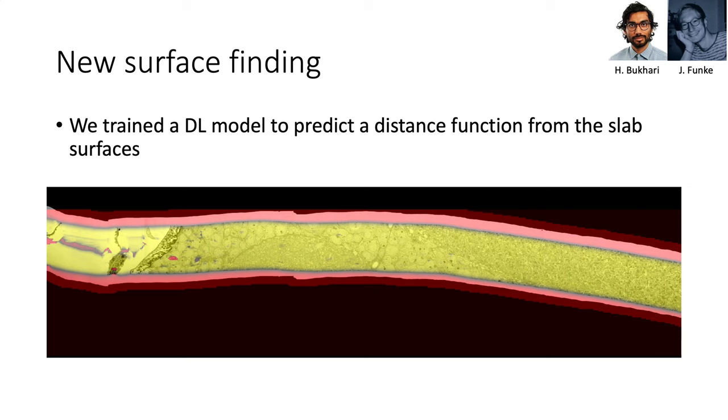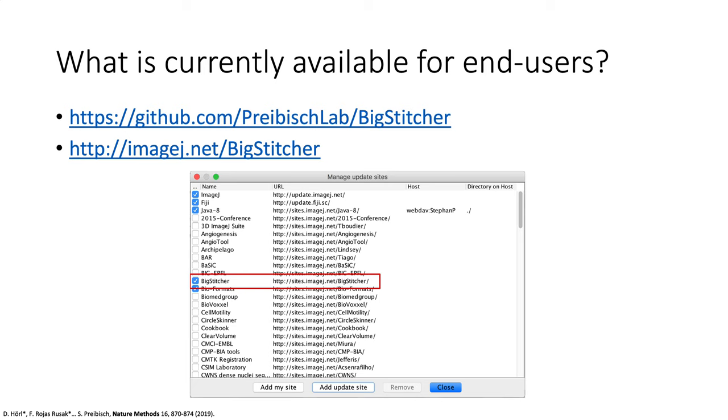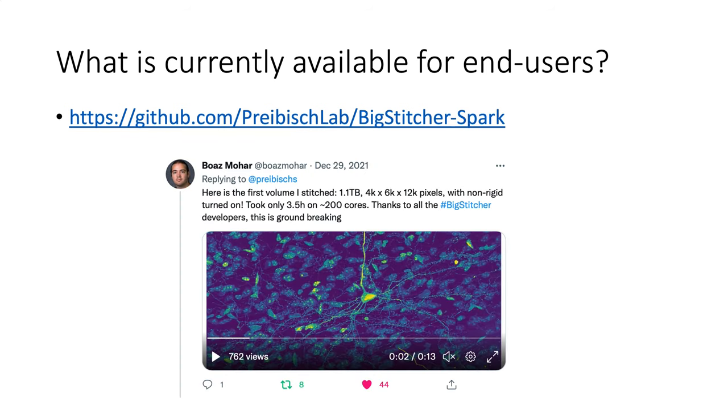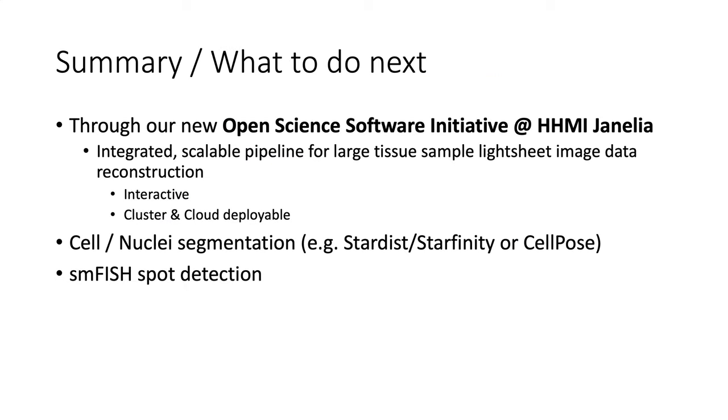What is currently available for end users? As I mentioned, BigStitcher is a GUI app you can download and use. Nikita actually made a nice YouTube video, there are tutorials, write me an email or write a comment on GitHub if you need any help. Even from the new project, some things are already available. We started the BigStitcher Spark repository, which for now allows you to do the most compute-intensive part, which is the fusion after you align everything. To fuse a gigantic dataset, Boas and the Shepherd tried this out. Even on non-rigid, it now takes only 3.5 hours on 200 cores, but before you were waiting almost a week to do this. This is really cool and you can use it as well already. It works on your workstation and is more efficient than the BigStitcher code you have now. It also works on the cloud or on the cluster, but it might still need some development. You can stitch terabytes and terabytes of data.